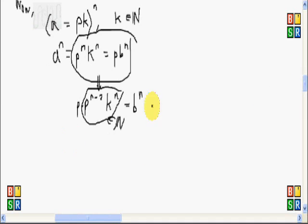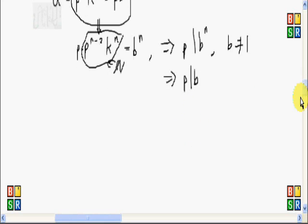So therefore, p divides b to the n. And by a similar argument here, we know that b is not equal to 1. And by a similar argument as we did with a, we can say that p divides b.